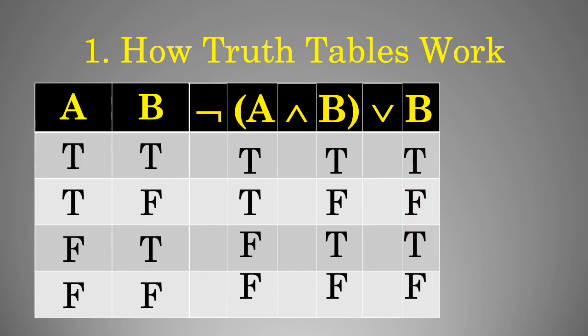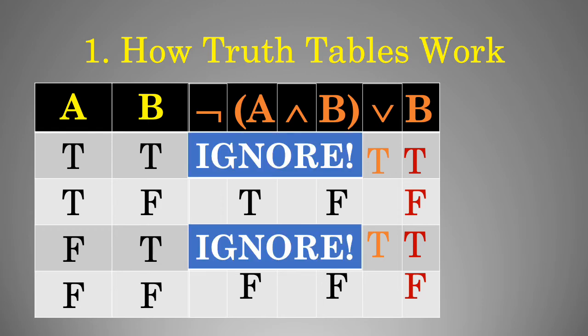Let's talk about some shortcuts. You have half of the disjunction for the main operator already figured out at this step. You know that whenever one disjunct is true, the whole disjunction is true. So just by looking at the rightmost column, you know the whole or statement is going to be true wherever B is true, and you can ignore what's going on on the other side of that disjunction. That effectively cuts your work in half — you only have to figure out those rows in which B is false.